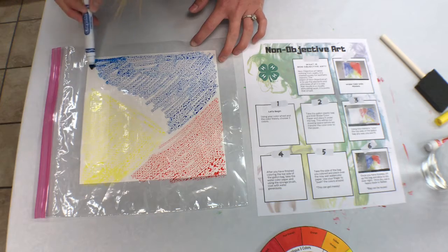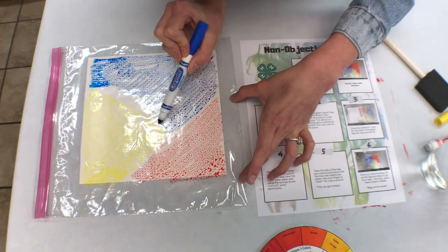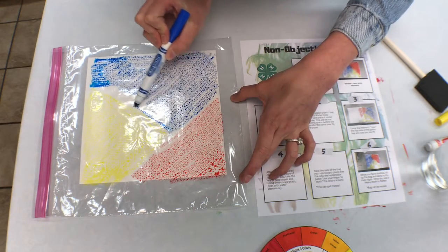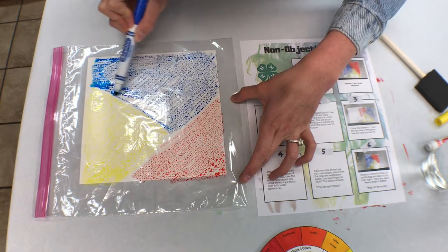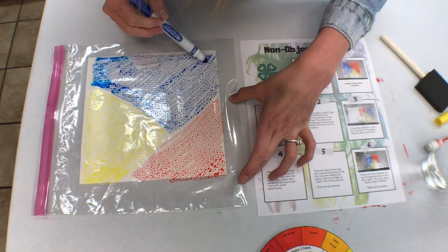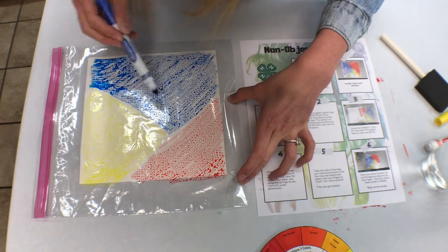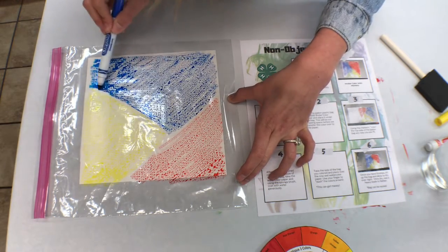You do want to make sure that the colors you use are directly opposite or very close to opposite on the color wheel. Otherwise, you'll notice they will all blend together and look like one big color. So you do want to have some variance in your color choices.